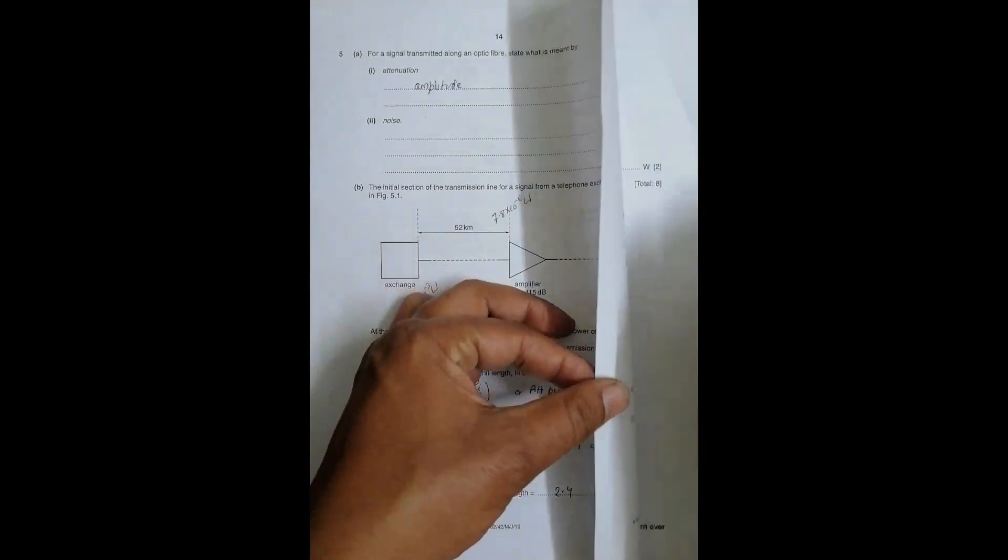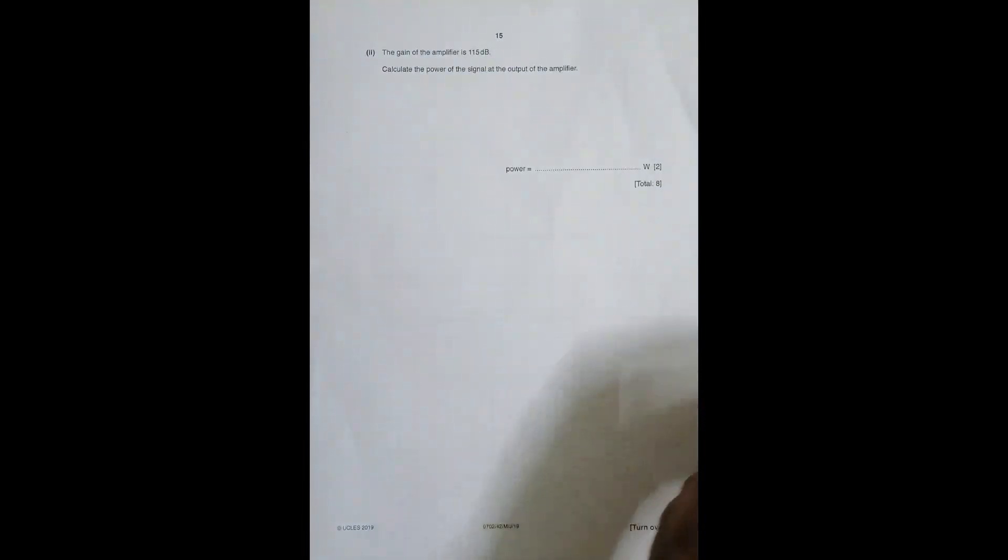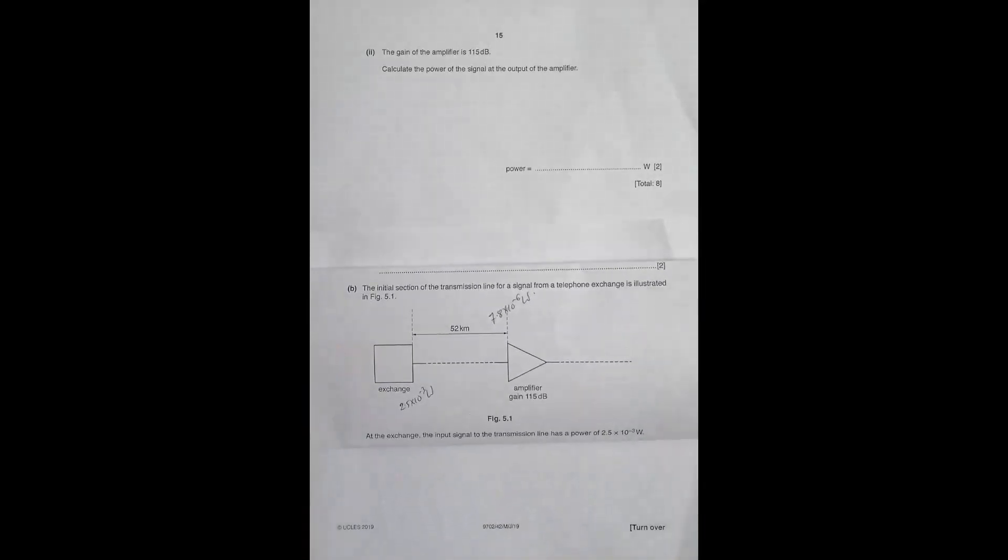Now the next question is: the gain of the amplifier is 115 dB. We can express gain in terms of ratios, in terms of number of times, and also in terms of dB as well.